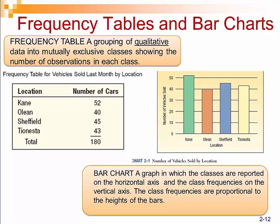We have frequency tables and bar charts. A frequency table — just think of frequency as counting. It's showing a grouping of qualitative data in a mutually exclusive class, showing the number of observations in each class. And if you look at page 148 of your text, mutually exclusive means the occurrence of one event means that none of the other events can occur at the same time.